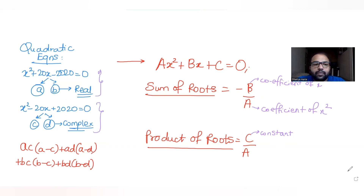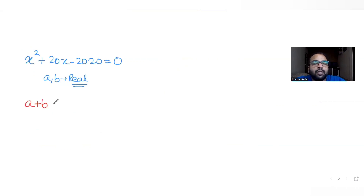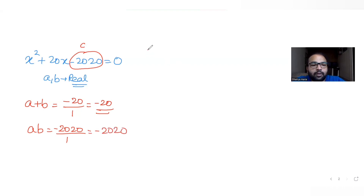The first quadratic equation is x² + 20x - 2020 = 0, with two real roots a and b. The sum of roots a + b = -20/1 = -20, and the product of roots a·b = -2020/1 = -2020.